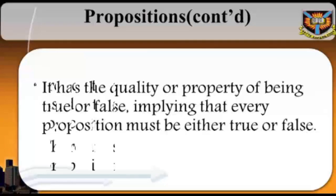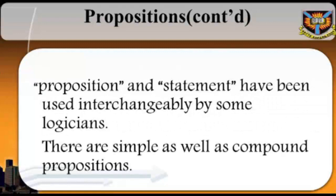Copi et al. distinguish between propositions and sentences. They point out that sentences are the means by which propositions are asserted. In other words, two different sentences, consisting of different words differently arranged, may have the same meaning and be used to assert the same proposition. For example, the following are two different sentences that make the same assertion: 'Goodluck Jonathan won the 2011 presidential election in Nigeria,' and 'The 2011 presidential election was won by Goodluck Jonathan.'